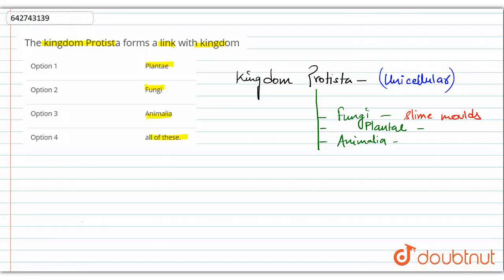For plants, we can take the example of planktons. As we know, planktons are a very important feature when it comes to the aquatic ecosystem because these planktons consist of chloroplasts. They have chloroplast, and that is why they are considered similar to plants.